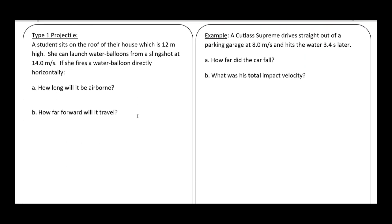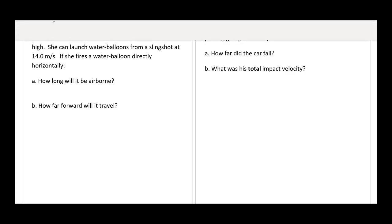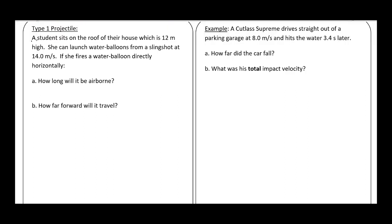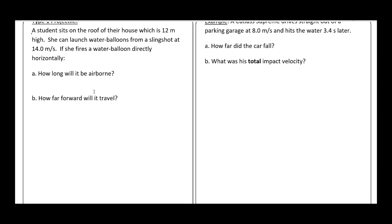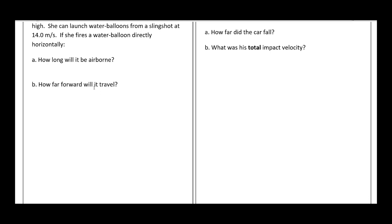We're just going to do one example here to set this up. We're going to have a particular way of setting these problems up, and I'm going to show you what I think is the best system. It works really well. If you stick to this, it's really systematic and it's going to get you to the right answer. So a student is sitting on the roof of their house, which is 12 meters high. She can launch water balloons from a slingshot at 14 meters per second. If she fires a water balloon directly horizontally, how long will it be airborne and how far forward will it travel? Well, no big surprise for anyone who's been paying attention, the first thing we need to do is draw a picture.